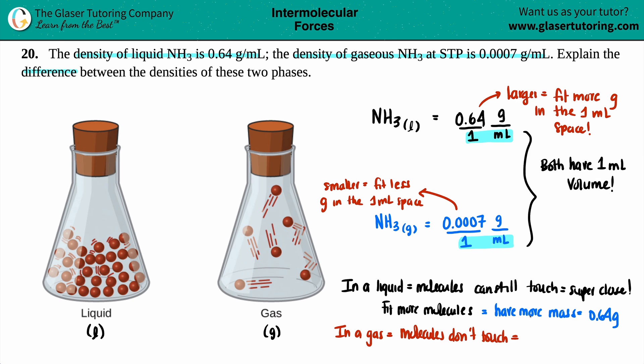And if they don't touch, that means that they are farther away. So if they're farther away and they're not allowed to be close to each other, you have to fit less molecules. And because you have less molecules, you will have less mass. And that's why the number is so very small, 0.0007 grams.